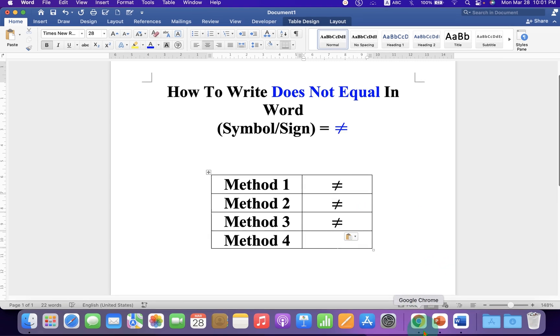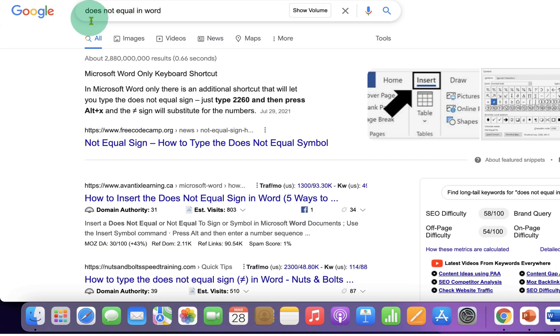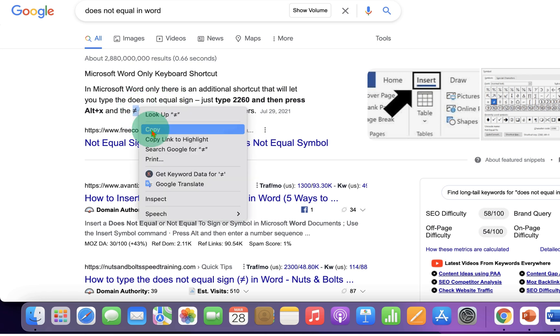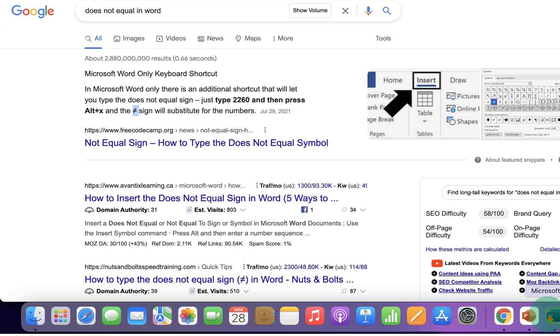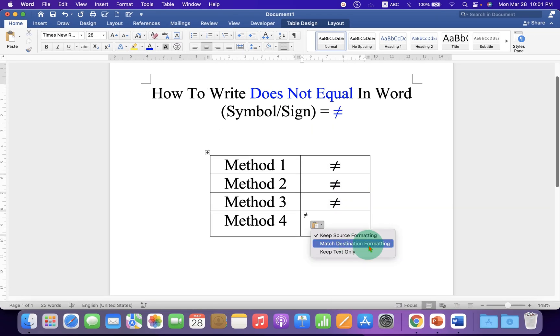In the last method you can just type does not equal in Word and you can see the symbol here. Just copy the symbol and paste it inside the Word document and select match destination formatting.